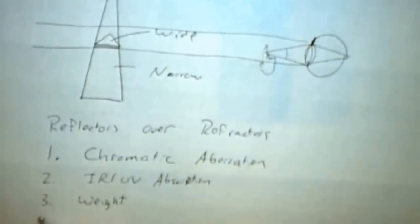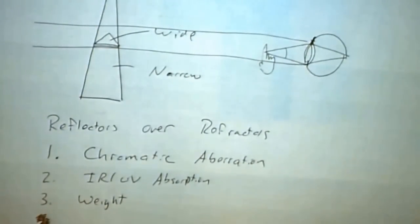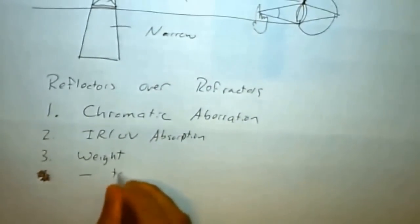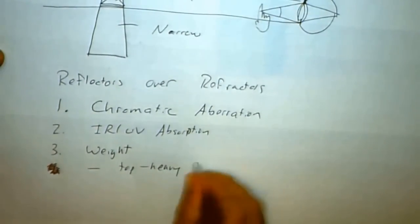So the absorption properties at non-visible wavelengths, that's a drawback. Third is the weight. And a couple of reasons why. Here, I'll move case four down. One is, with refractors, they're top-heavy. Top-heavy support.